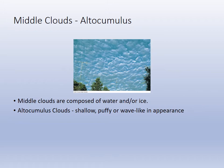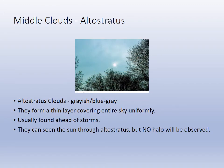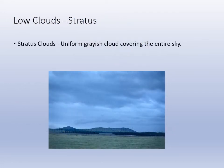Altocumulus clouds have that puffy mid-level appearance. Altostratus clouds are opaque but you can still see the sun through them — the sky tends not to be blue. Low stratiform clouds cover the entire sky; they are layered, low-level stratus clouds.